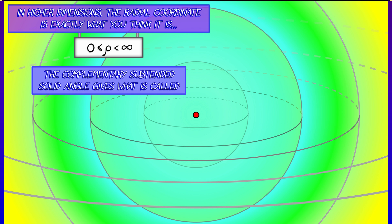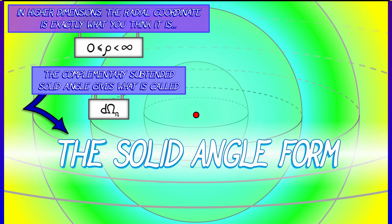There's all the angular stuff that is complementary to this. This gives something called the solid angle form, and it is denoted d omega n in n-dimensional space.